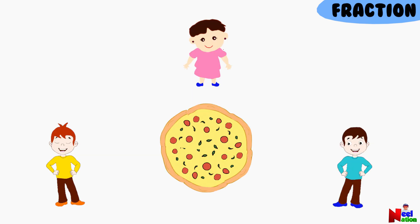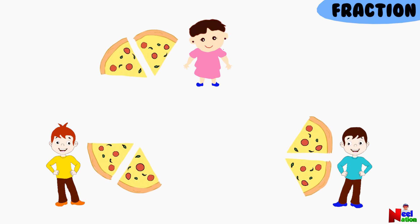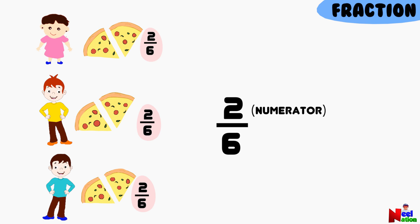Imagine you have a delicious pizza that's been evenly divided into six equal slices. How would you share it fairly among three friends? Each friend will get two slices of pizza. You are right. In terms of fractions, each friend receives two out of the six pieces of the pizza. In other words, each friend receives two sixths of the whole pizza. Can you tell me which number represents the numerator? Two is the numerator. Yes, you are right. Two is the numerator. The numerator shows how many slices each friend receives.